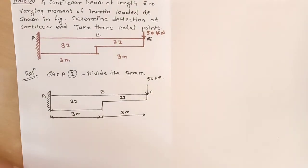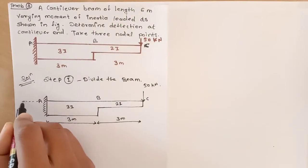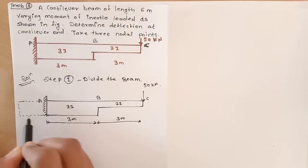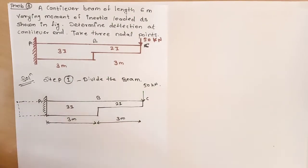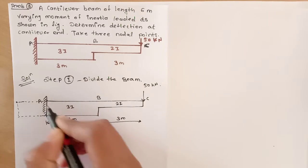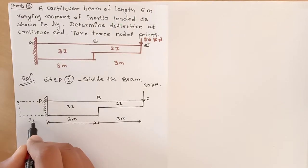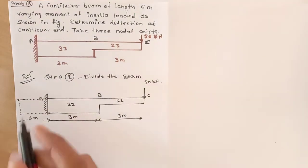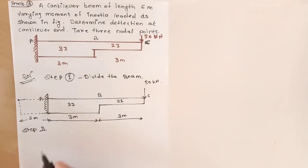Next, take a dummy nodal point from the left side of the A support. Because A support is a fixed support, we take a dummy nodal point here. This distance is also 3 meters from point A. Then the next step, step number two, is to draw the bending moment diagram.